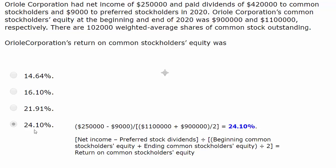The numerator is net income available to common shareholders. So we take the $250,000 of net income and we subtract out the $9,000 preferred stock dividends that were paid to the preferred shareholders.